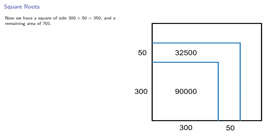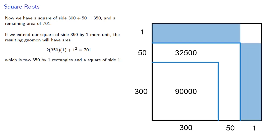If we extend our square of side 350 by one more unit, the resulting gnomon will have area 2(350)(1) + 1² = 701, which is two 350 by 1 rectangles and a square of side 1.